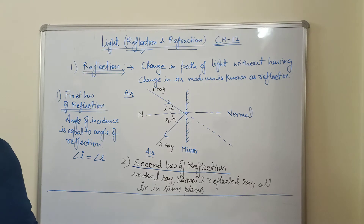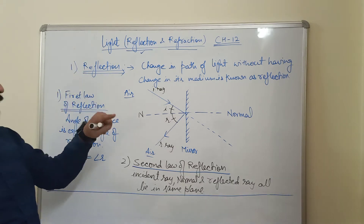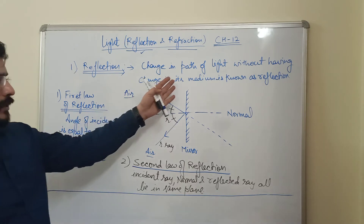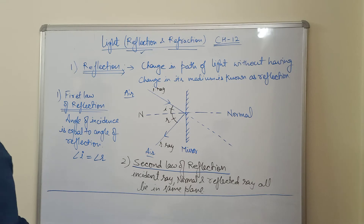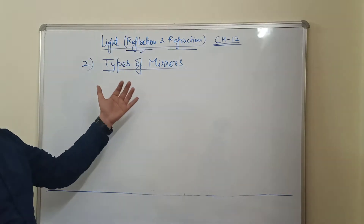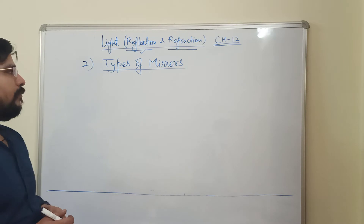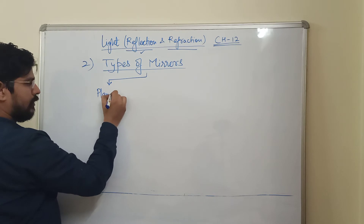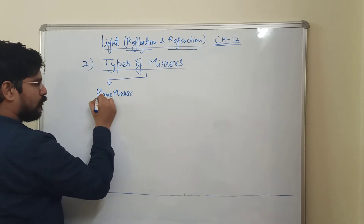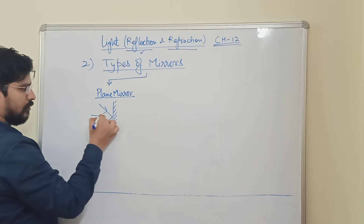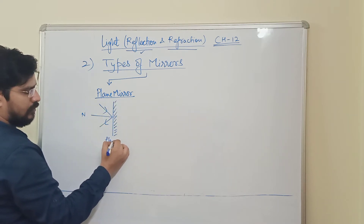Now we will move ahead and discuss reflection with spherical mirror cases. We have two types of mirrors: one is the plane mirror — on which we already studied the first and second laws of reflection — and the other is spherical mirrors.